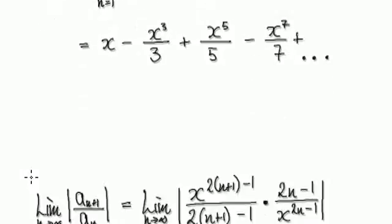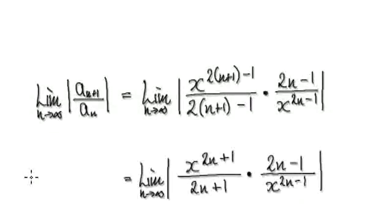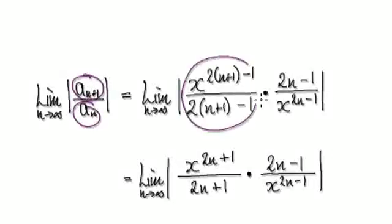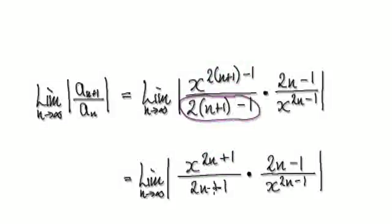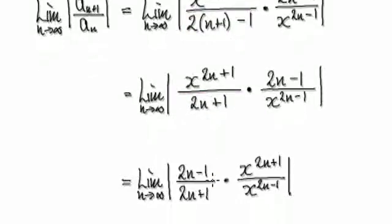We're going to use the ratio test. When it comes to the ratio test, you always get a_{n+1} divided by a_n. So this is your a_{n+1} divided by a_n. It's the same as multiplying by the reciprocal of a_n. That would then give you this. Now tidy this up — this times this, this times this — and this thing here will then become this, and then this thing here will then become this.